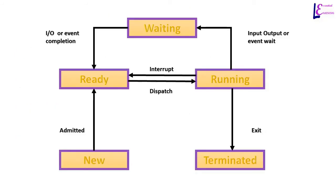This figure shows how a process moves from one state to another. A process in new state moves to ready state. A process in ready state is dispatched to running state, but if a running process is interrupted, it can be sent back to ready state. If a running process triggers an event that requires an I/O device, it is sent to waiting state, and when it has used that resource, it is moved back to ready state. A process in running state moves to terminated state upon completion. There can be other reasons for termination besides completion, like time limit exceeded or failure of an I/O device.